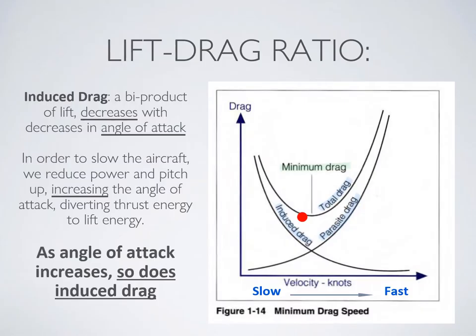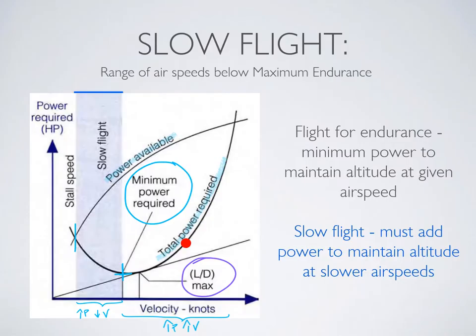Looking at this chart, if we reduce power past the point of maximum endurance — for example, 1700 RPM — even if we increase the pitch to get more lift, we eventually won't have enough power or energy to overcome the increase in drag and we won't be able to maintain altitude anymore. It is possible to fly more slowly than the maximum endurance airspeed, and the reason is that you add additional power to overcome the increase in induced drag.